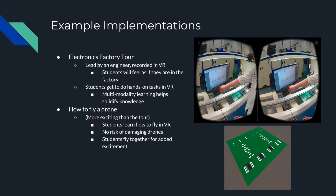The second example implementation was how to fly a drone. The feedback on the electronics factory tour was that most students find it kind of boring, so we made another video on how to fly a drone. That was also two parts: a VR video showing the drone flying and explaining to students how to fly it, and then a part where students all fly the drones together and can see each other flying around. There's no risk of actually damaging drones, which are pretty expensive, so students get to learn and practice without that risk.